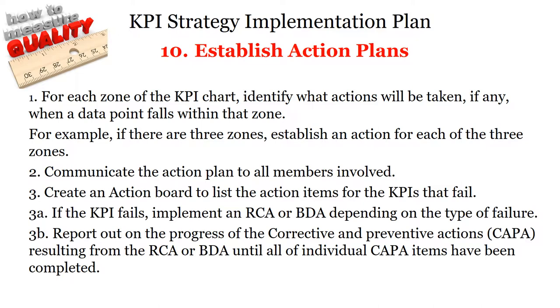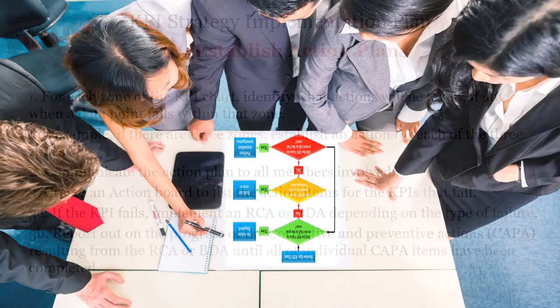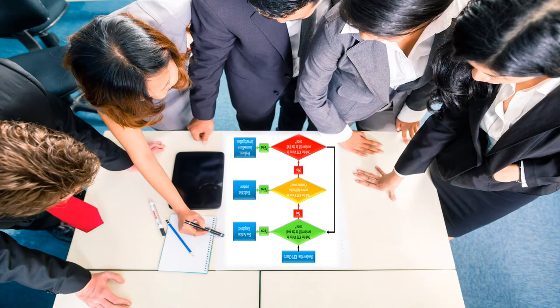Communicate the action plan to all members involved. Create an action board to list the action items for the KPIs that fail. If the KPI fails, implement an RCA or BDA depending on the type of failure. Report out on the progress of the corrective and preventive actions resulting from the RCA or BDA until all individual KPI items have been completed. Ensure everyone responsible for the KPI knows and understands the action for each zone, and update these zones as necessary.